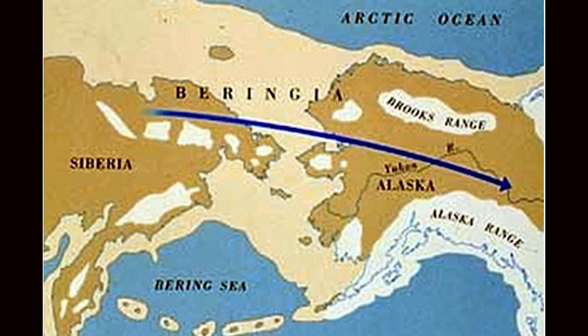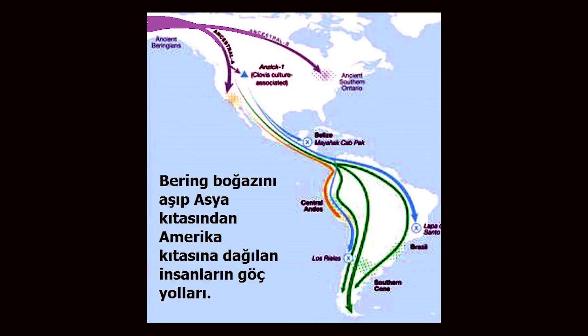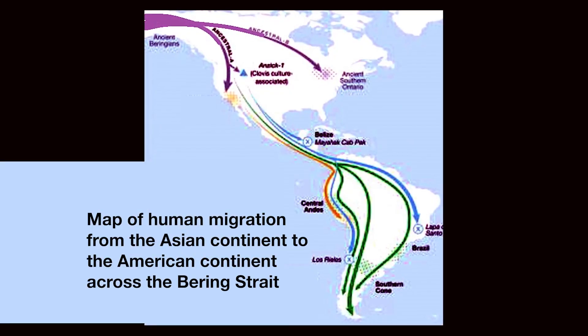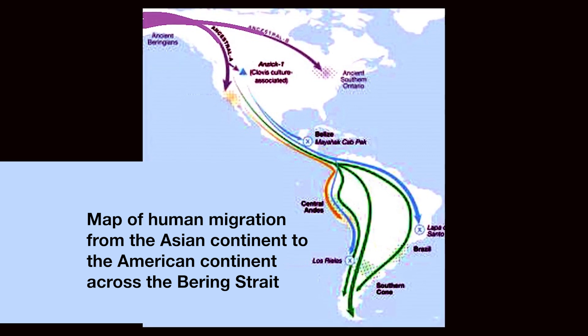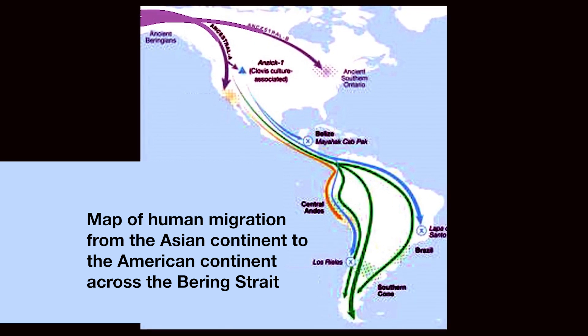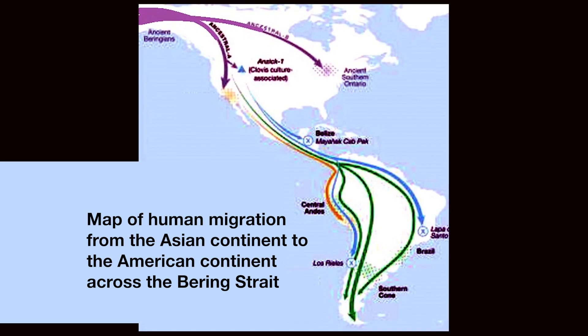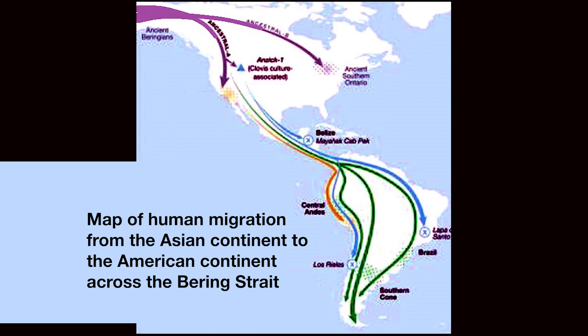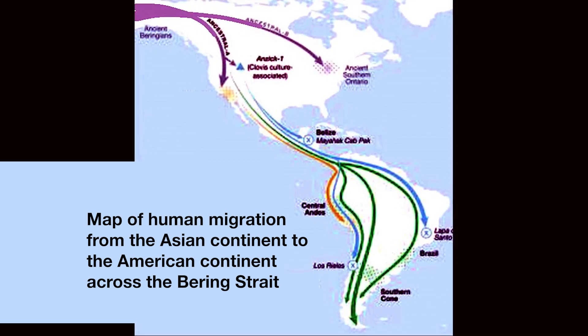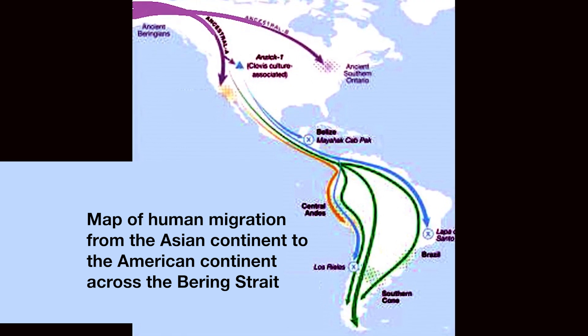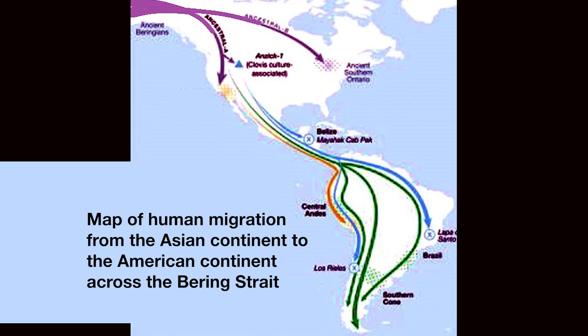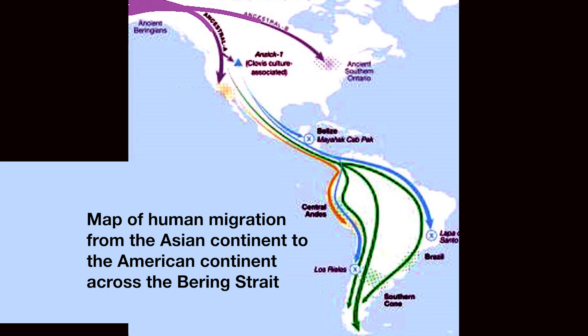After crossing the Bering Strait they spread southward across North and South America. People who came to North America first ventured south from the Beringia region — the purple region at the top on this map. The areas reached by those who began their journey 30,000 years ago are represented in green and blue. There is evidence that people reached as far as Patagonia, the southernmost point, represented in green — as far back as 14,000 years ago, genetically proven by bones found at Monte Verde.